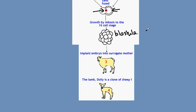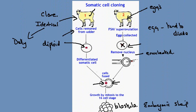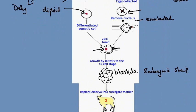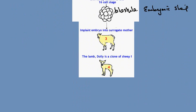This blastula is essentially an embryonic sheep. The genetic identity of this embryo is that of the original animal we started with. This embryo is then placed into another female sheep, which is the surrogate mother. The embryo will grow into a fetus and then be born.